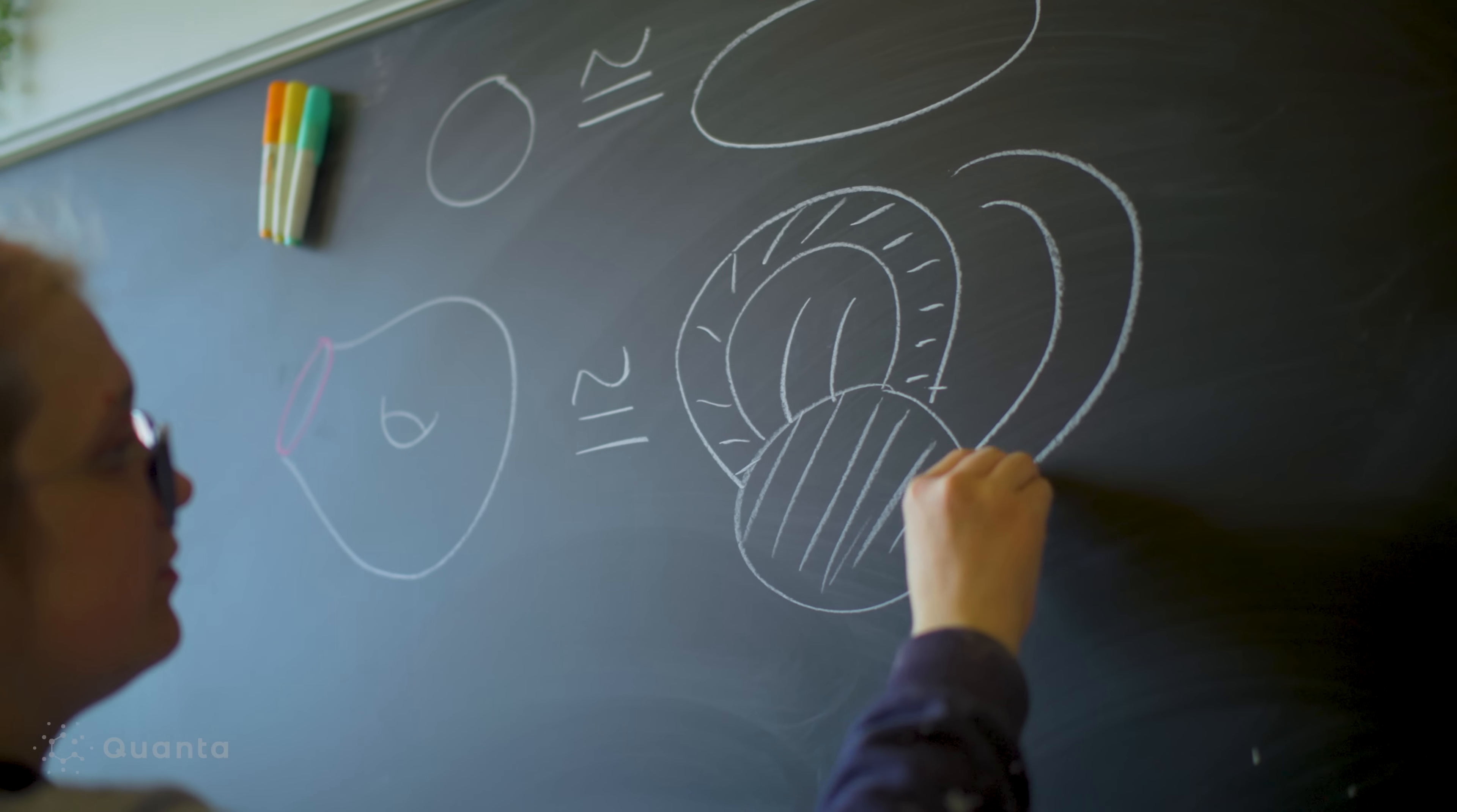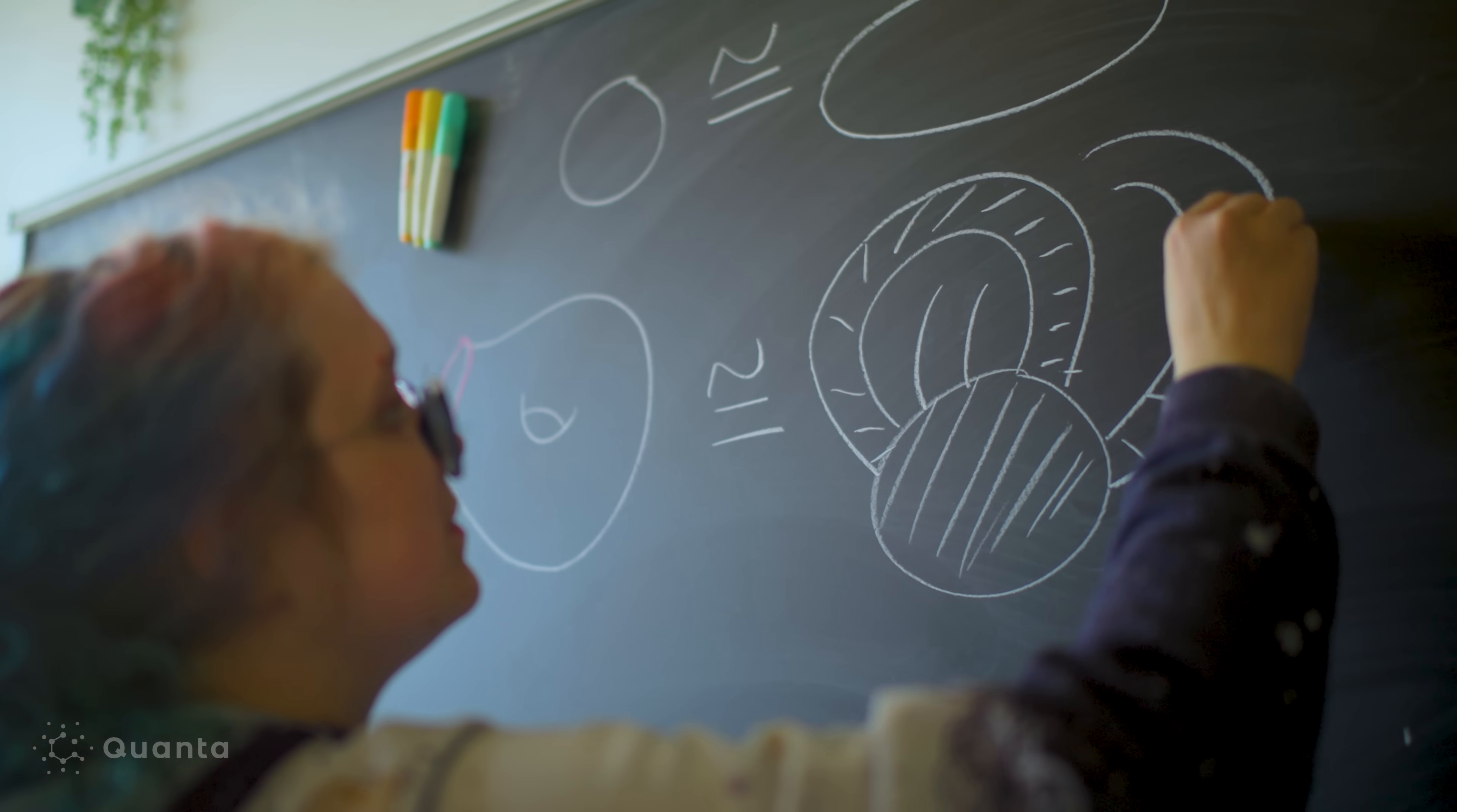When you zoom in close enough, you can't tell the difference between any two manifolds. But when you look at the global structure, zoom out and look at the whole manifold all at once, they can have wildly different properties.